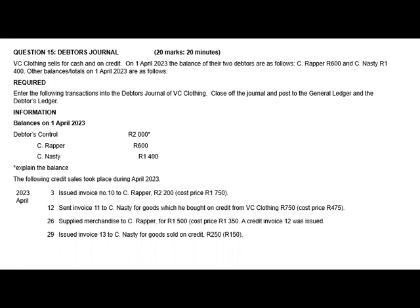I will do question 15, which is the debtor's journal. We are dealing with VC Clothing, which sells on vocational credit. On the 1st of April 2023, the balances of the two debtors are as follows: C. Repa was 600, and C. Nasty was 1,400. The debtor's control balance is 2,000, which is the sum of those two, because we only have two debtors.